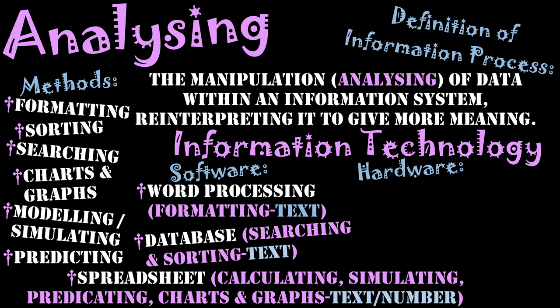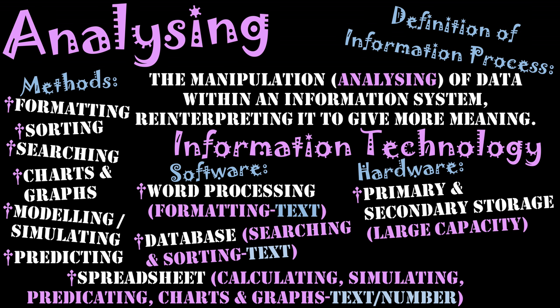We will also talk about hardware for analyzing, covering two components that also link to the information process of processing. First, in order to do analyzing you need good primary and secondary storage. As with the supercomputers for weather prediction, they are large computers because you need a lot of RAM to process and store all these values live as they're entered into the system. You also need a lot of secondary storage — hard disk drives and solid state drives — to save this data. Large systems record a lot of data usually stored in their databases, so you need large capacity of both primary and secondary storage.